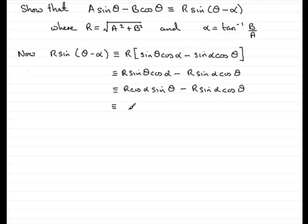So, I can say that this is identical to a constant. Let's call it A times sine theta. And for R sine alpha, that's a constant. So, I can call it B as a constant times cos theta.